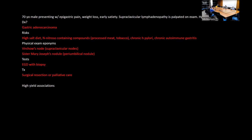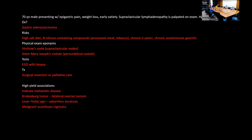High-yield metastatic associations with gastric adenocarcinoma: Leser-Trélat sign (sudden onset diffuse seborrheic keratosis), malignant acanthosis nigricans, and Krukenberg tumor (bilateral ovarian metastases from gastric adenocarcinoma).